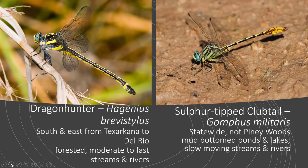The Dragon Hunter and the Sulfur-tipped Club Tail are two other club tails. The Dragon Hunter really doesn't have a club to its tail but the Sulfur Tip certainly does. The Dragon Hunter is found in south and east Texas from Texarkana to Del Rio and they like more forested areas with moderate to fast streams and rivers. The Sulfur Tail is found statewide except for the piney woods, and they really like mud-bottomed ponds because the larvae like to hide under the mud and sit and wait for their prey to get close. They're also found in lakes and very slow moving streams and rivers.